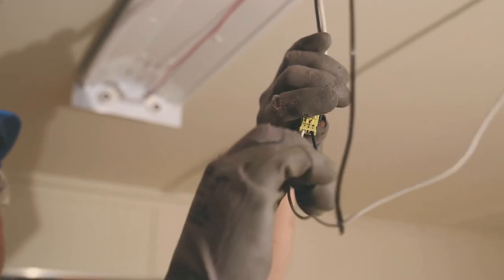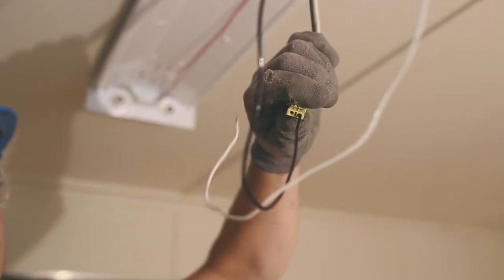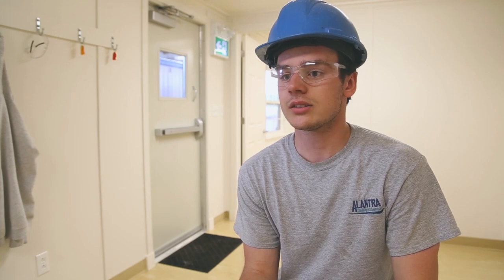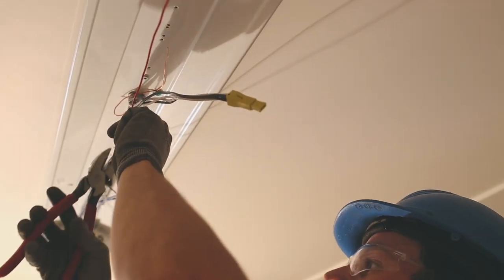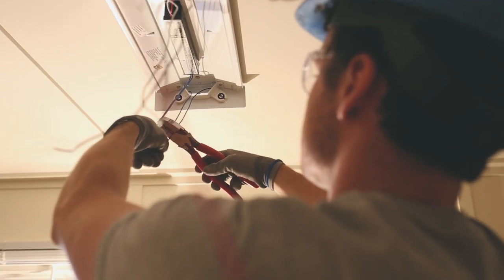You can start by pulling the two or four main power wires out of the ballast connector. Cut your ballast wires that are coming out of the ballast to the correct length depending on how big your light is. Strip those wires after you're done that.